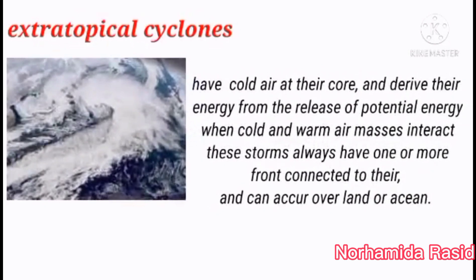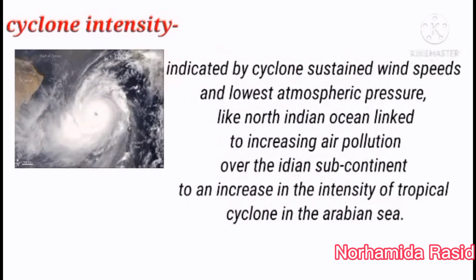Extra-tropical cyclones have cold air at their core and derive energy from the release of potential energy when cold and warm air masses interact. These storms always have one or more fronts connected to them and can occur over land or ocean. Cyclone intensity is indicated by the cyclone's sustained wind speeds and lowest atmospheric pressure, linked to increasing air pollution over the Indian subcontinent increasing the intensity of tropical cyclones in the Arabian Sea.